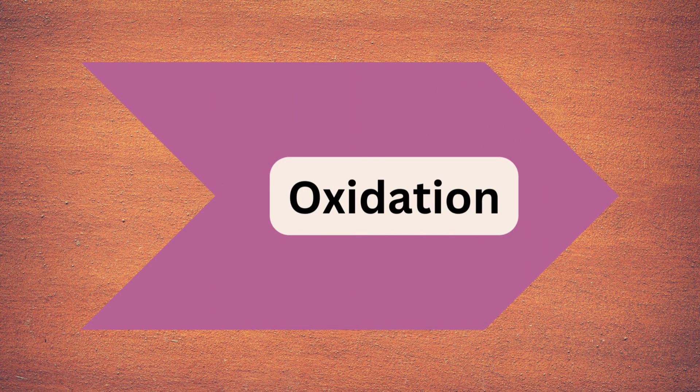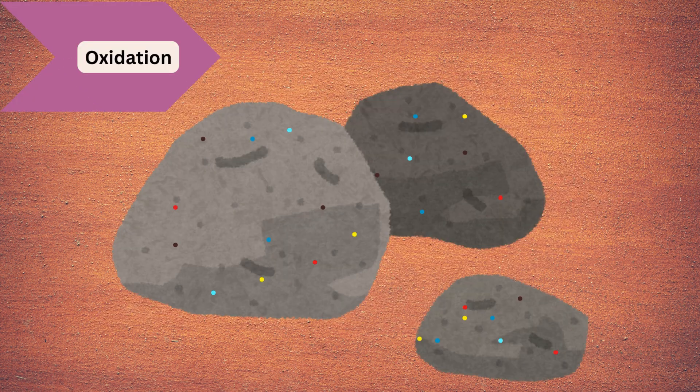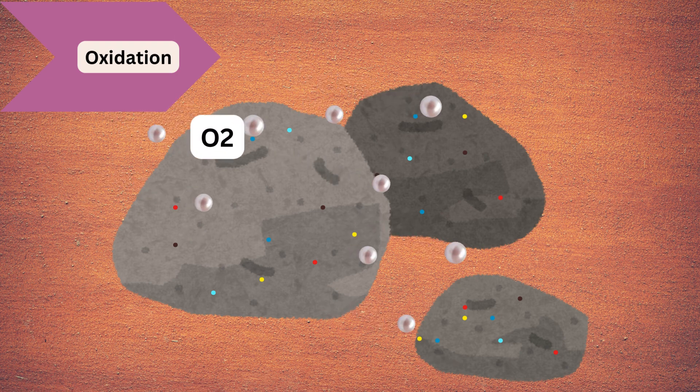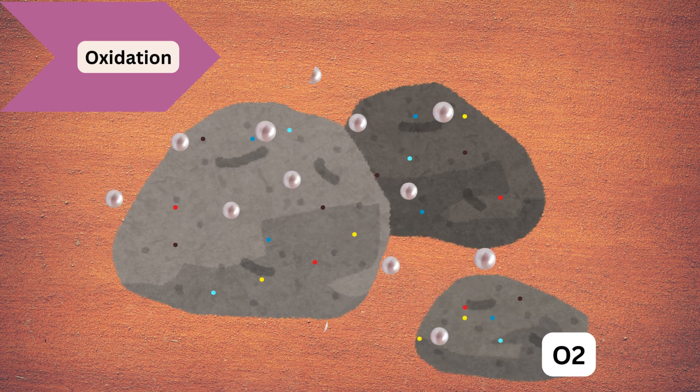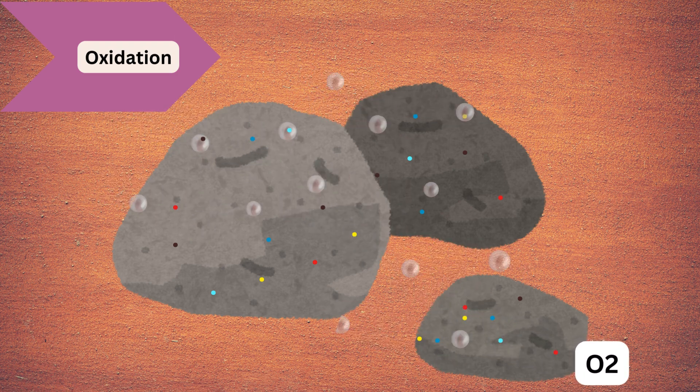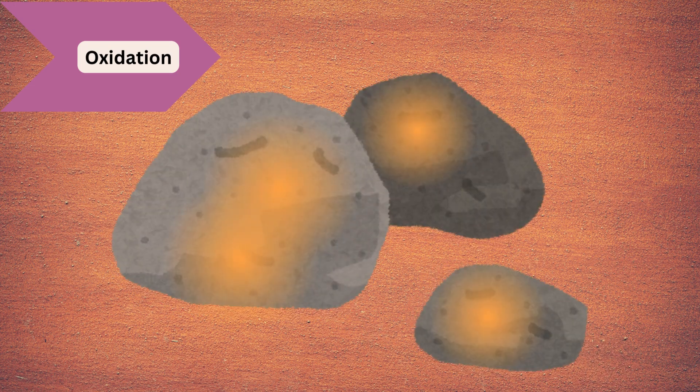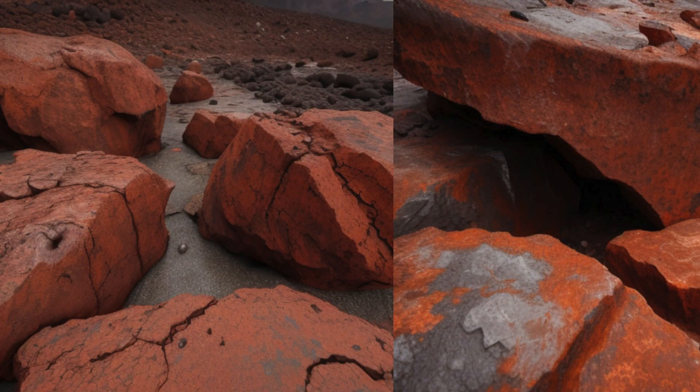The first type is oxidation. Consider the colorful dots as the minerals in the rocks — the minerals react with oxygen to form oxides, as seen in iron-rich rocks. The reddish color is due to iron reacting with oxygen or water to form iron hydroxide, or rust.